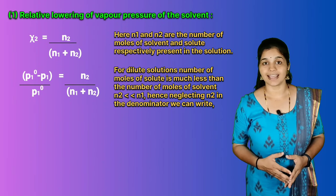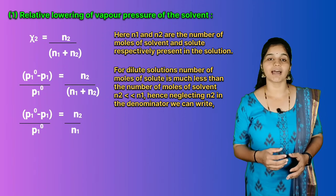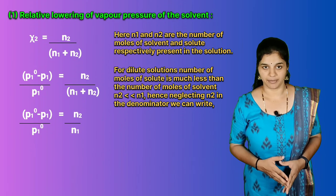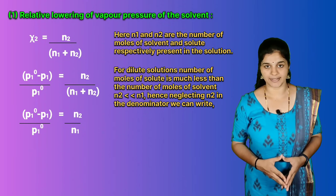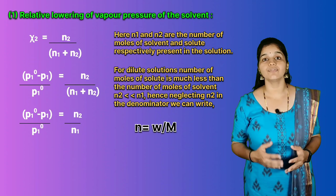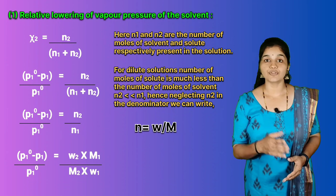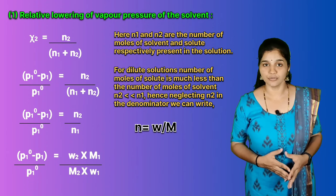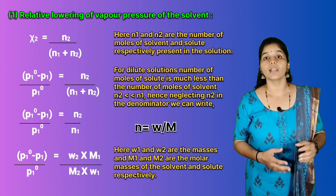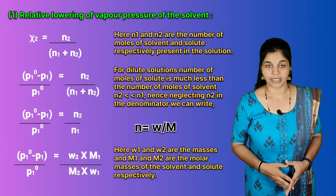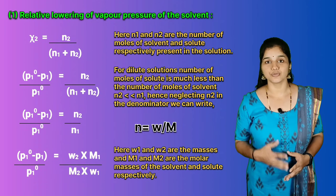For dilute solutions, the number of moles of solute is much less than the number of moles of solvent, that is n2 << n1. Hence neglecting n2 in the denominator, (p1⁰ − p1)/p1⁰ = n2/n1. Since the number of moles equals mass divided by molar mass, n2 = w2/M2, so we can write (p1⁰ − p1)/p1⁰ = (w2 × M1)/(M2 × w1), where w1 and w2 are masses and M1 and M2 are molar masses of the solvent and solute respectively. Using this equation, the molar mass of solute M2 can be calculated.